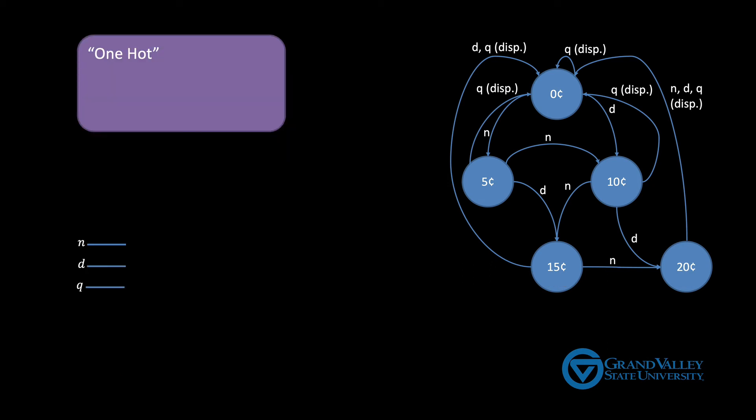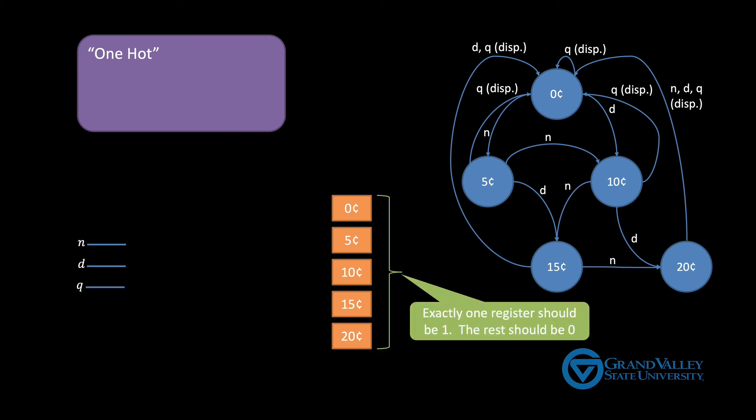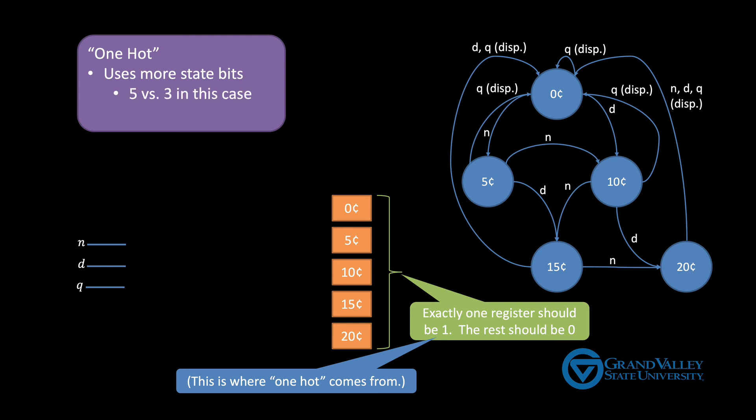So with that in mind, another approach is called one hot. With one hot encoding, we don't number the states. Instead, we use a one bit register for each state. At any given time, exactly one of these registers will have a one in it and the other four should have a value of zero. That's where the name one hot comes from. Exactly one of the registers should be one. Now notice that this technique uses more state bits, five versus just three in this case. However, in exchange, we get a much simpler circuit.